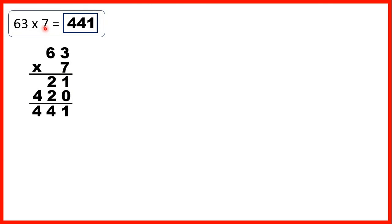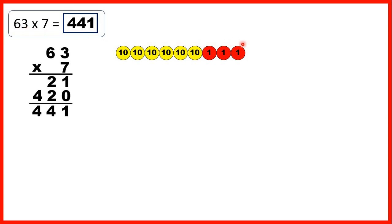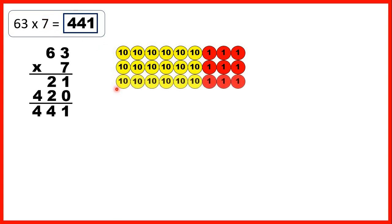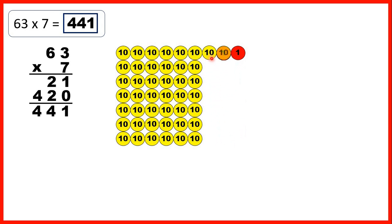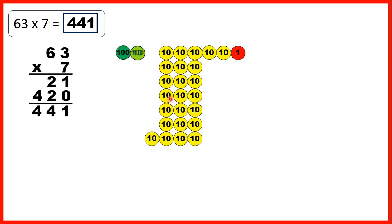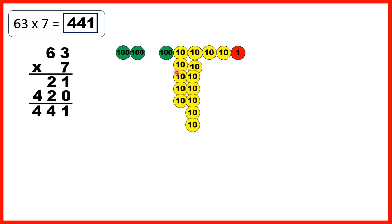We can also show multiplication using place value counters. So we start with 63 — that's 6 tens and 3 ones — and to multiply by 7 we can show these place value counters seven times. Now we have 21 ones, but we can regroup those into 2 tens and 1. We can regroup our tens as well — we can exchange 10 tens for 100. So altogether we now have 4 hundreds, 4 tens, and 1. So that's 441.